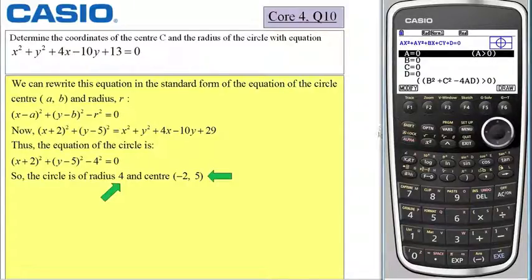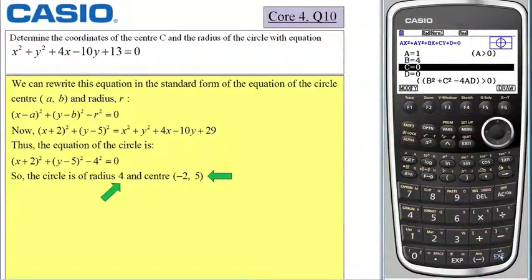You can see that the coefficient of x squared and y squared is just 1. I select execute. The coefficient of b is 4 and select execute again. The coefficient of c is negative 10 and again I select execute, and the constant term is actually 13. So I select execute and f6 to draw.